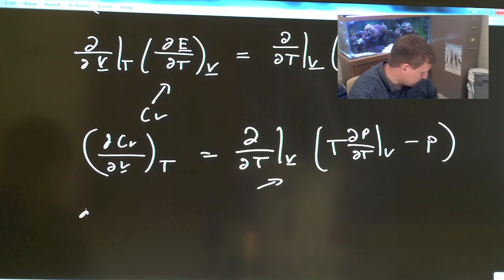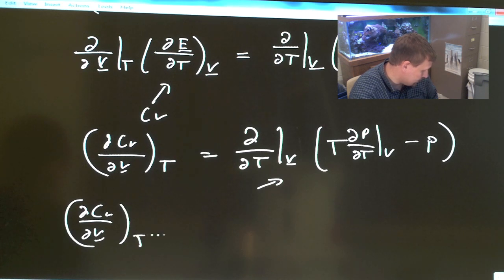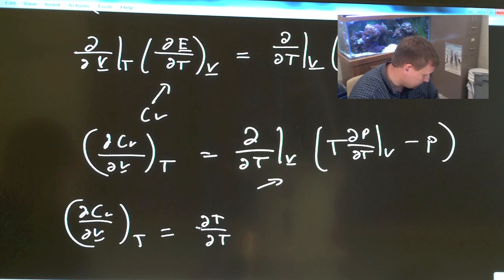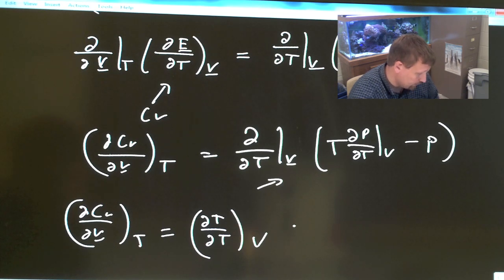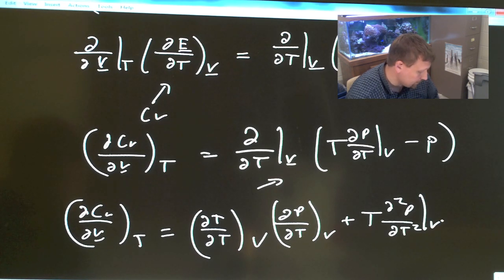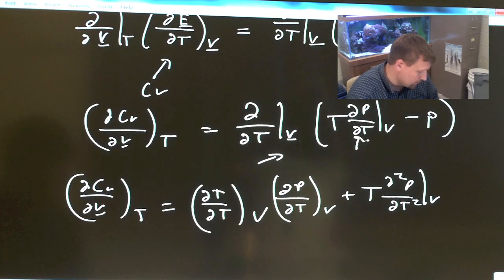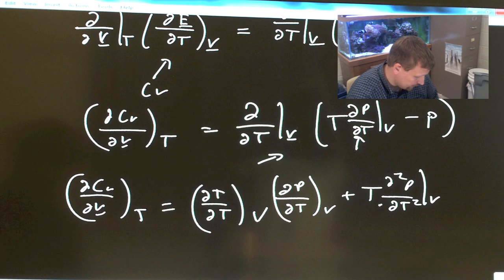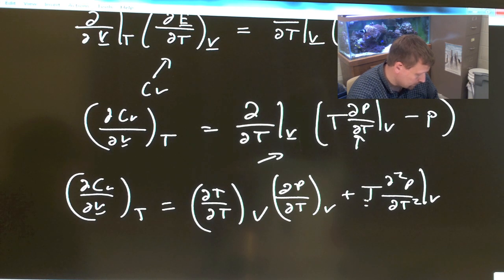And you end up with del CV del V underbar constant T equals del T del T at constant V for the first term here times what's on the inside, which will be del P del T at constant V, plus T del squared P del T squared constant V. We're taking the derivative of the inside term times the temperature here. And then lastly, just minus this term here, del P del T constant V.